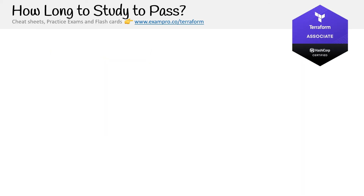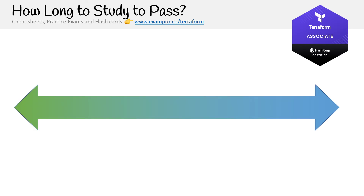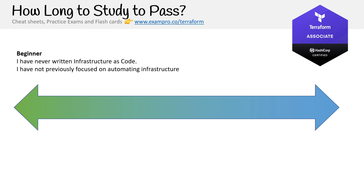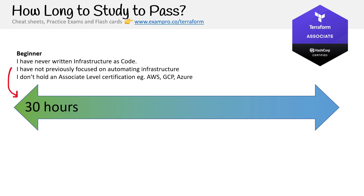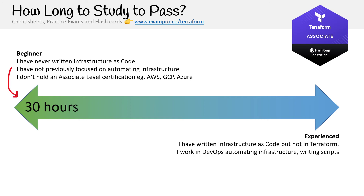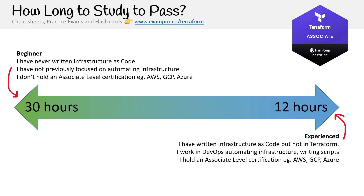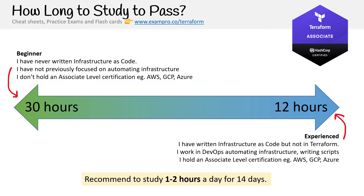How long does it take to pass this exam? I have a scale here — beginner and experienced. A beginner is someone who's never written infrastructure as code, hasn't previously focused on automating infrastructure, and doesn't hold an associate-level certification. If this is you, you're looking at a 30-hour study time, and you really should obtain a cloud service provider associate before taking this exam. For the experienced person — someone who's written infrastructure as code, maybe CloudFormation or ARM templates, is already working in a DevOps role, and holds an associate level — they're looking at 12 hours of study time.